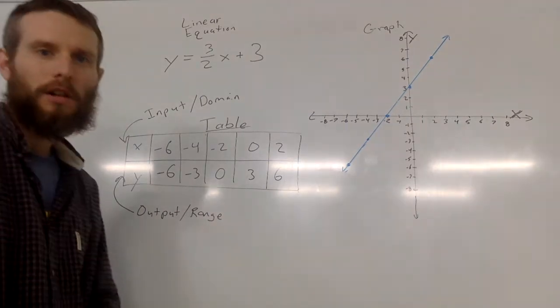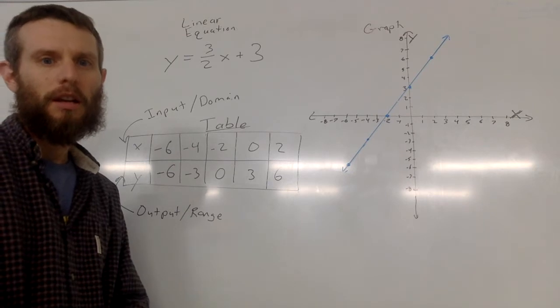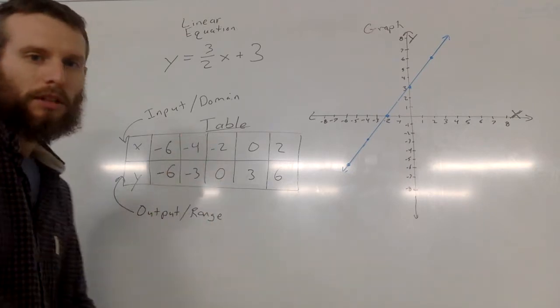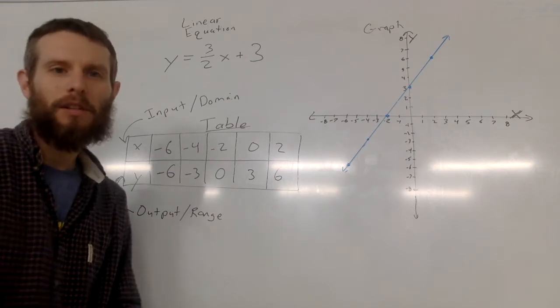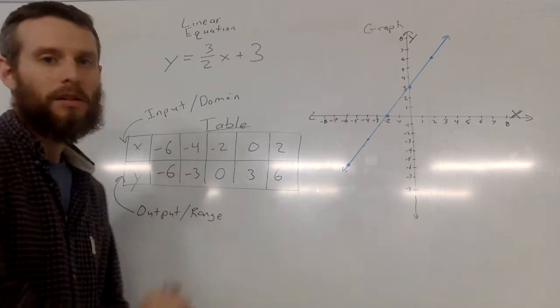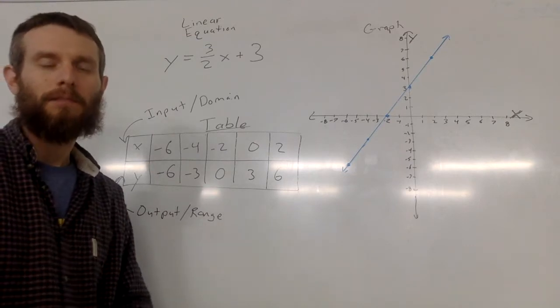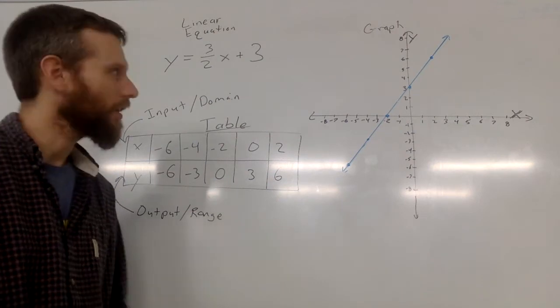Really, a linear equation and a graphical line and an input-output table, those are three different ways of representing the same information. Or maybe another way to say it is three different ways of representing a relationship between sets of numbers.